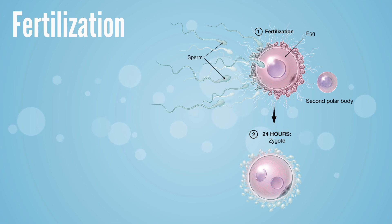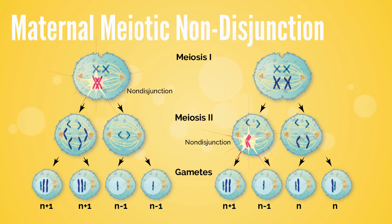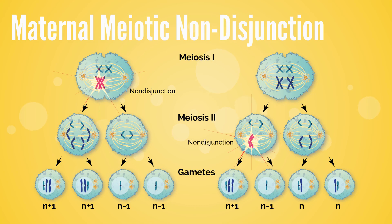Errors in meiosis can lead to an abnormal oocyte which may produce gametes with an alteration of chromosome number called heteroploidy. Heteroploidy may occur through nondisjunction in either the first or second meiotic division. Nondisjunction is the failure of one or more pairs of homologous chromosomes or sister chromatids to separate normally during nuclear division, usually resulting in an abnormal distribution of chromosomes in the daughter nucleus.